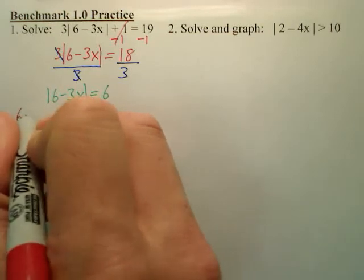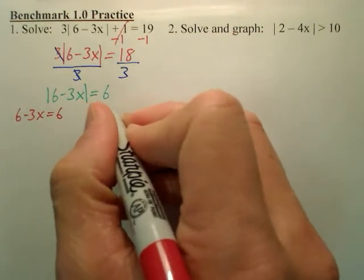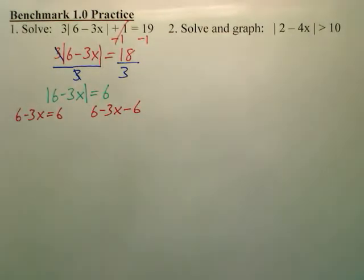So again, what's inside the absolute value, which is this, could equal 6, or it could also equal negative 6. So we're going to solve both of those. And that will be done.